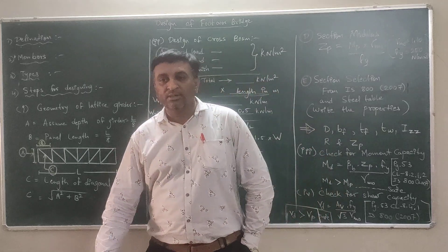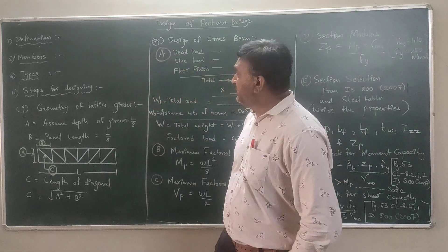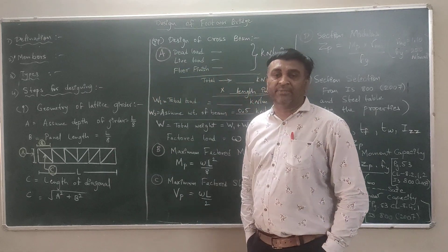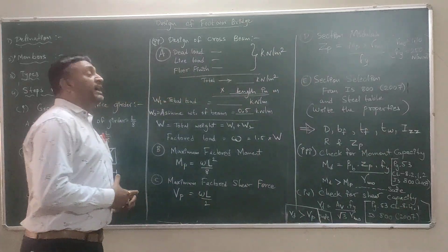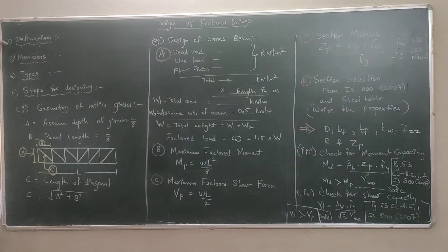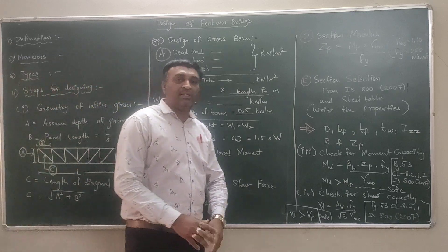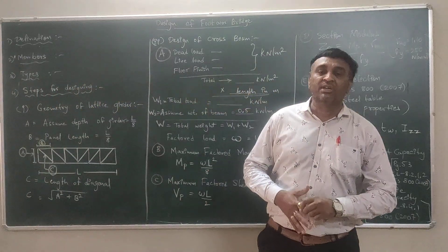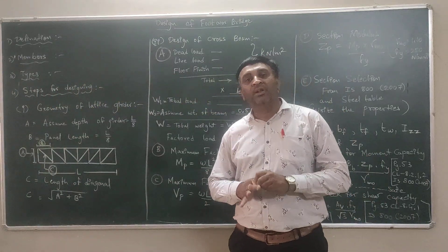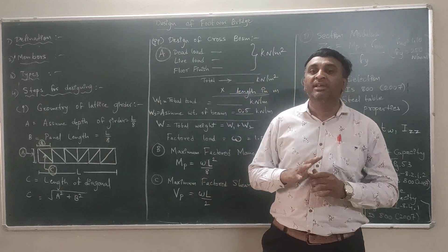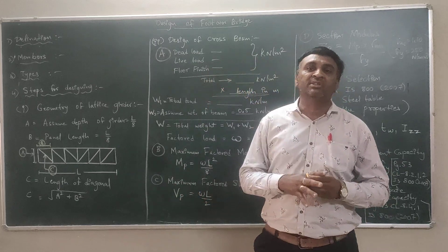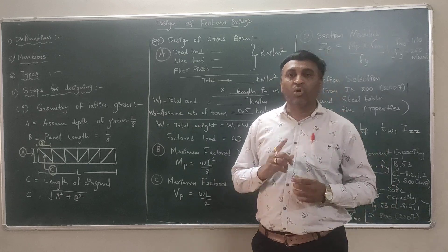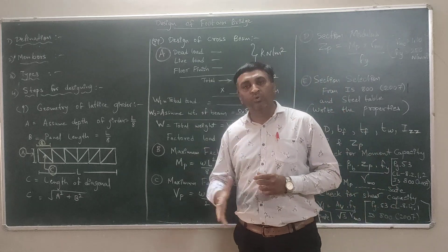Good morning students. Today we are starting the types of bridges. The first type is the foot over bridge. The definition is: a bridge which is used only for the purpose of walking. Not a single vehicle is allowed on the bridge — that type of bridge is called a foot over bridge.